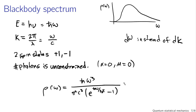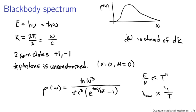Converting from dk to dω, using expressions for energy, allowing for two spin states, and setting μ = 0, you arrive at the black body spectral intensity formula: ℏω³/(π²c³) · 1/(e^(ℏω/k_BT) − 1). This formula predicts that energy density is proportional to T⁴, and that the wavelength of maximum intensity is proportional to 1/T — Wien's law. Quantum statistical mechanics is essentially the answer to the question: where does the black body radiation spectrum come from?